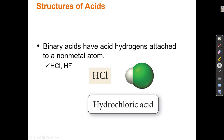Binary acids have acid hydrogens attached to a non-metal atom. Binary means two, so binary acids have two elements, and one of the elements is always an H — it's just an H stuck to something else. There are halogen acids: those with fluorine, chlorine, bromine, and iodine bonded to an H.